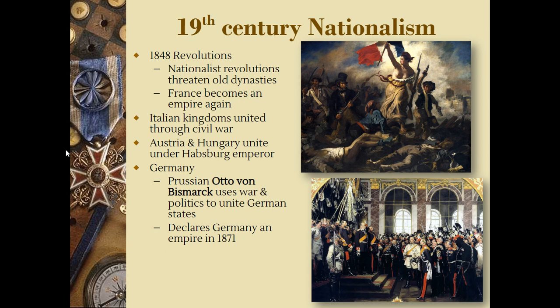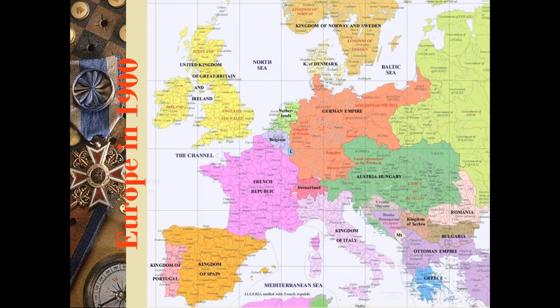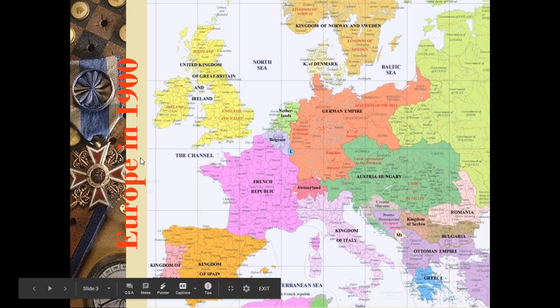Within some of these old empires, like Austria-Hungary, there are several different ethnic groups that are bunched together within those empires who are going to be trying to break away, divide themselves from the imperial power, and establish their own separate independent states. So this is what Europe looks like in 1900.